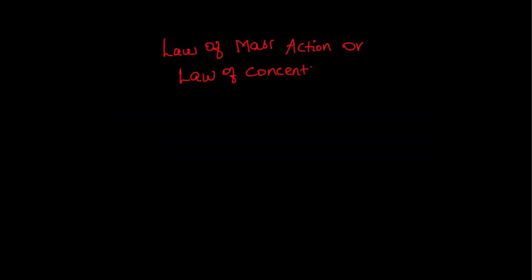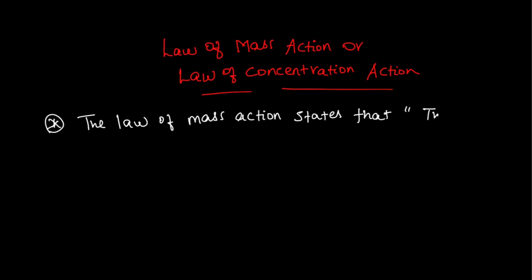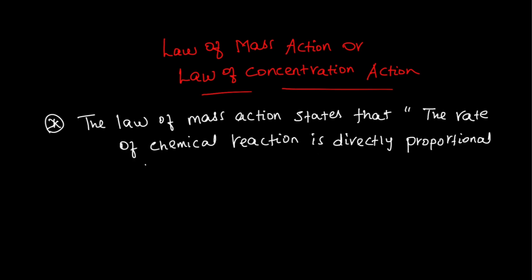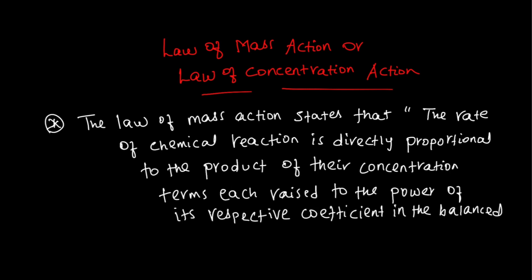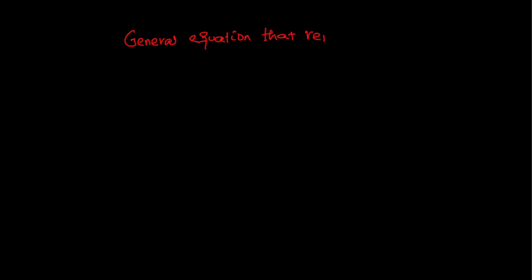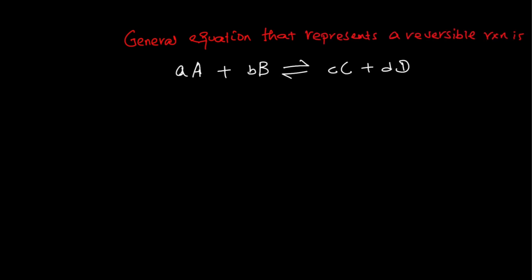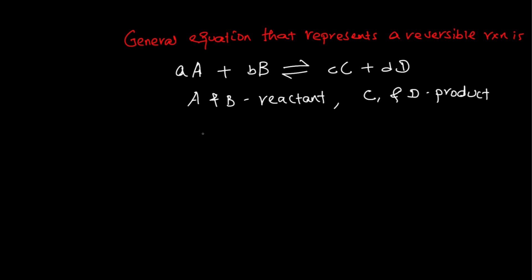The law of mass action states that for a balanced chemical reaction, the rate of a chemical reaction is in direct proportionality to the concentration of the reactants, each raised to the power of their respective stoichiometric coefficients. Capital letters A and B represent reactants, and capital letters C and D represent products. The rate of forward reaction depends on the concentration of reactants, and the rate of reverse reaction depends on the concentration of products.